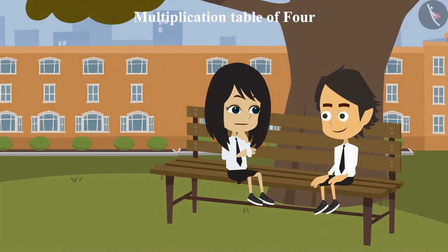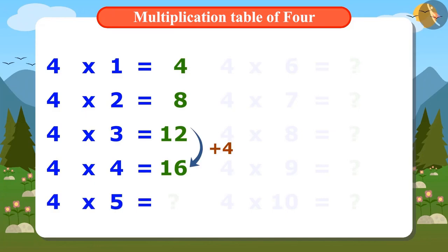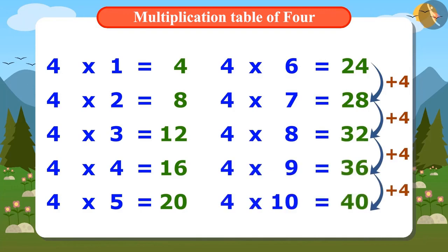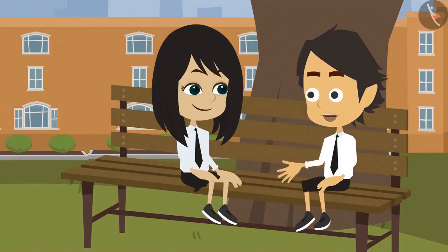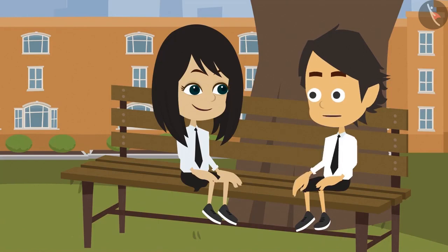That means we can find the next number in the multiplication table of 4 by adding 4 to 16, which will be 20. In the same way, we can find the next number by adding 4 to 20. That is 24. This way, we will continue to add and we will find out the next number. Now we get to know the whole multiplication table of 4.